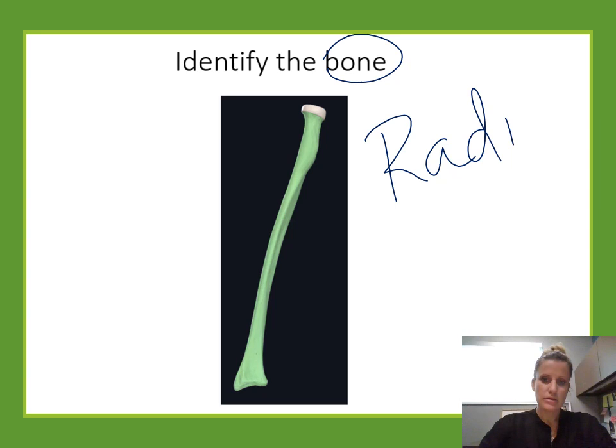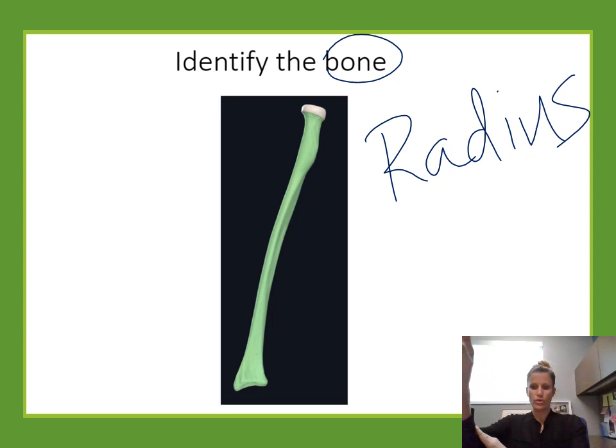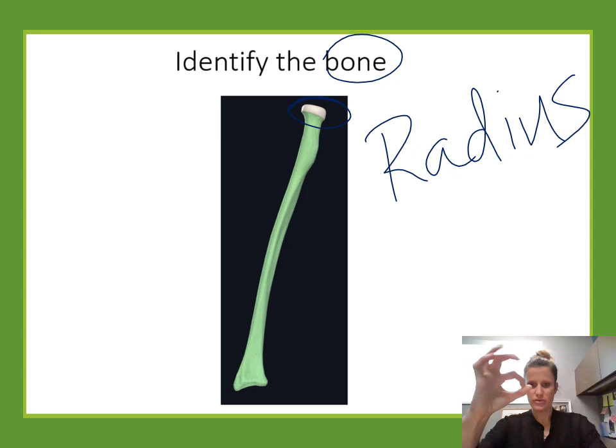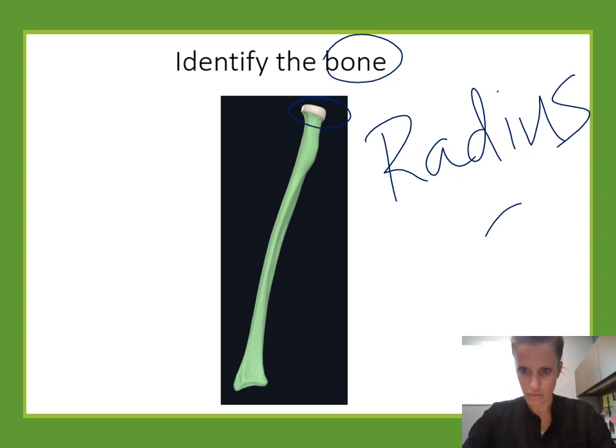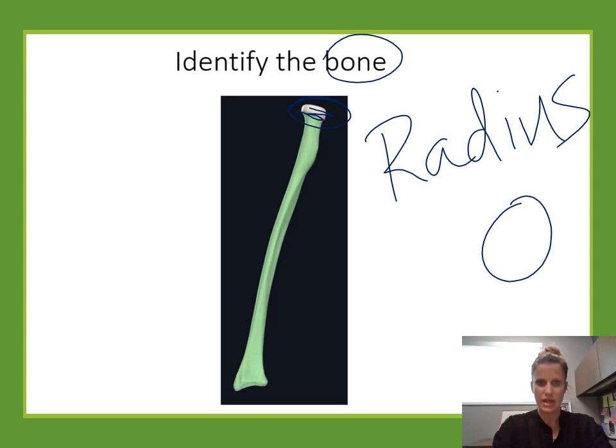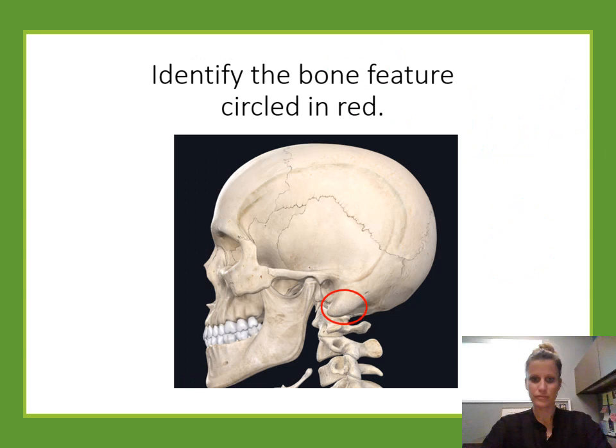Identify the bone. This is a radius — the bone on the thumb side of the forearm. I know that because the top of the radius looks like a perfect flat circle. If you look down on it, it's just a perfect circle, so that rounded edge tells me it's the radius.